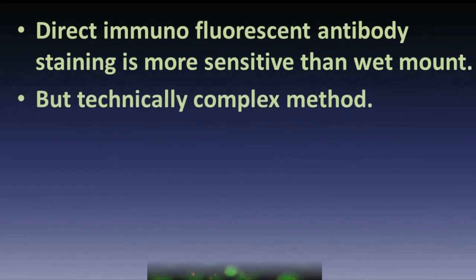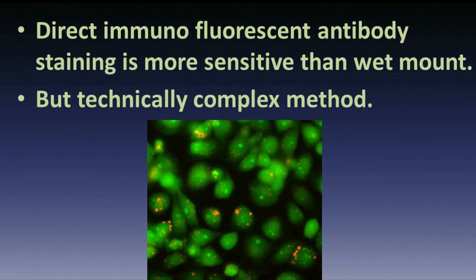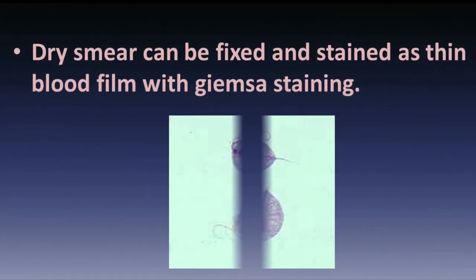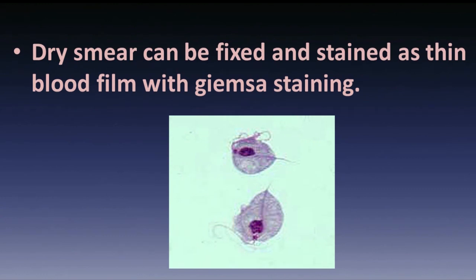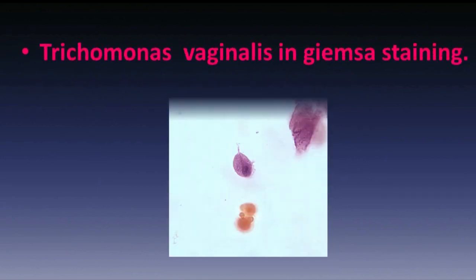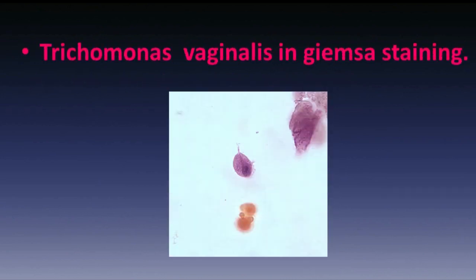Direct immunofluorescent antibody staining is more sensitive than wet mount but is a technically complex method. A dry smear can be fixed and stained as a thin blood film with Giemsa stain. Trichomonas vaginalis and Giemsa staining is shown here.